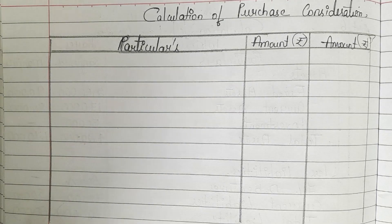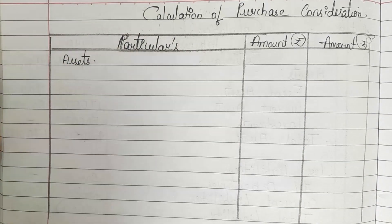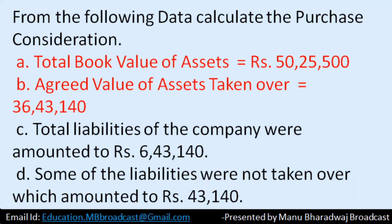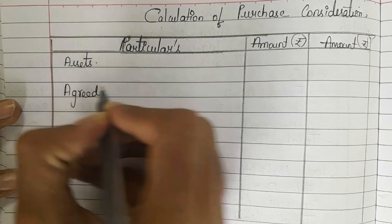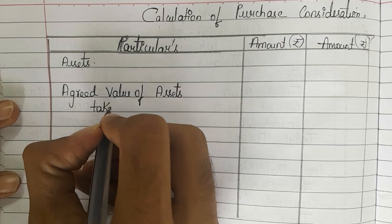First, what we need to do is write all the assets. Total book value of assets is 50,25,500 — that is the total book value the company had. Agreed value of assets taken over means the value to which the purchasing company has agreed. So here we directly write the agreed value — how much? 36,43,140. Here you have to write the agreed value of assets taken over directly.